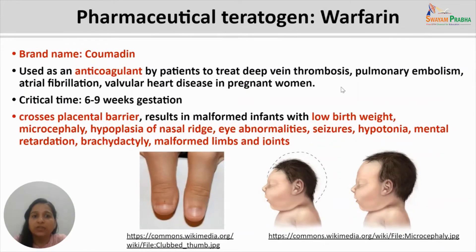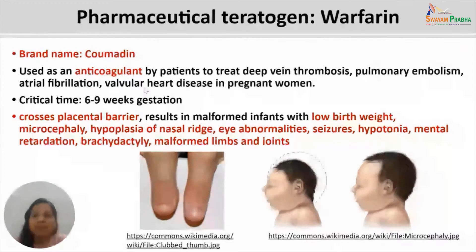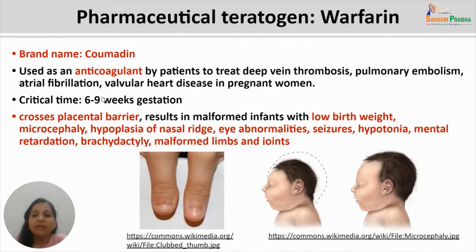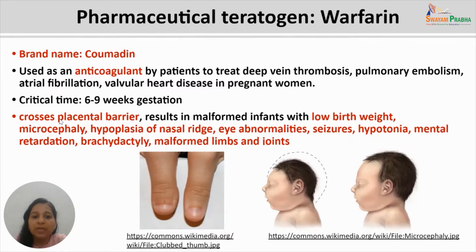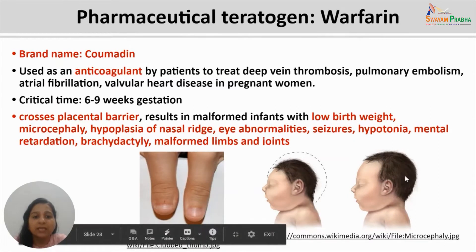Another important pharmaceutical teratogen is warfarin, sold under the brand name Coumadin. It is used as an anticoagulant for treatment of deep vein thrombosis, pulmonary embolism, atrial fibrillation, and valvular heart disease, even in pregnant women. Warfarin is maximally effective during its critical period of six to nine weeks of gestation. This pharmaceutical teratogen is able to cross the placental barrier and reach the embryonic circulation, resulting in malformed infants with low birth weight and microcephaly, which is reduction in the size of the head and brain.